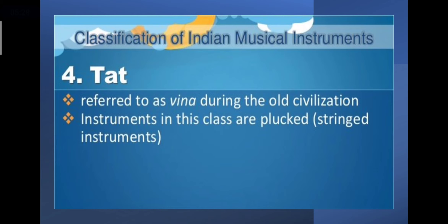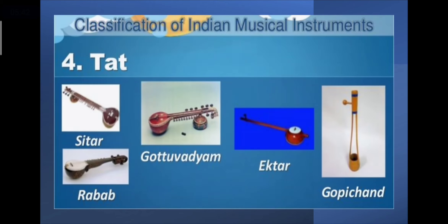The fourth classification of Indian musical instruments is Tata — this is referred to as 'vina' during the old civilization. Instruments in this class are plucked, also known as string instruments. Here are some examples of instruments under the Tata classification.